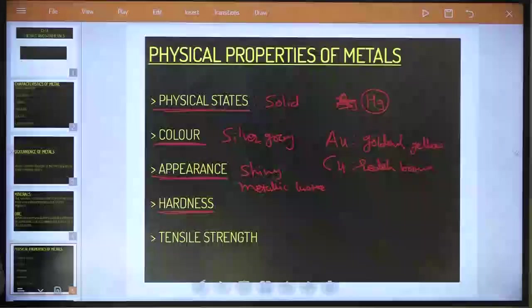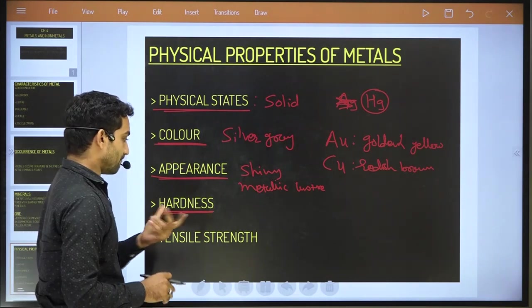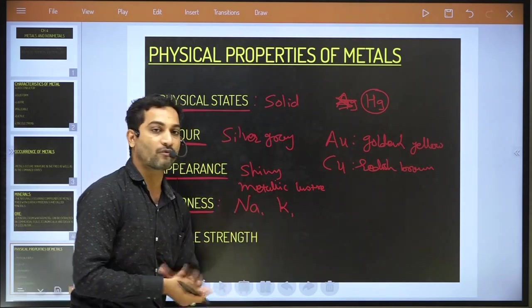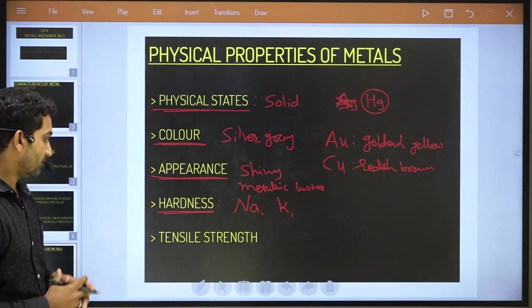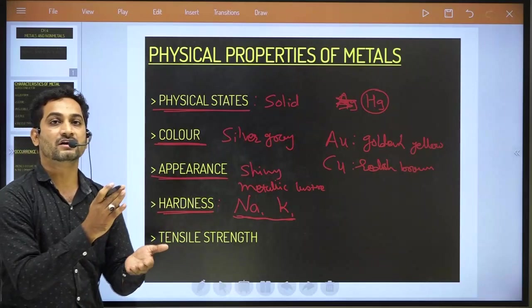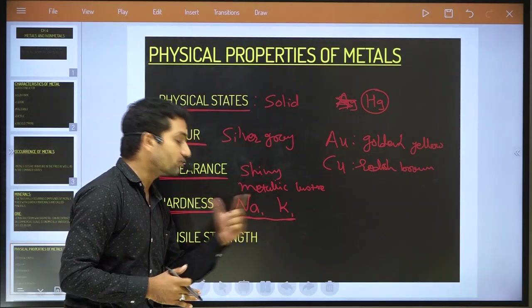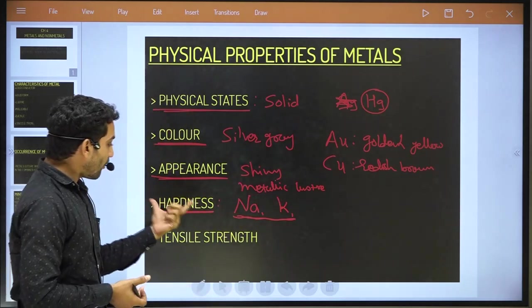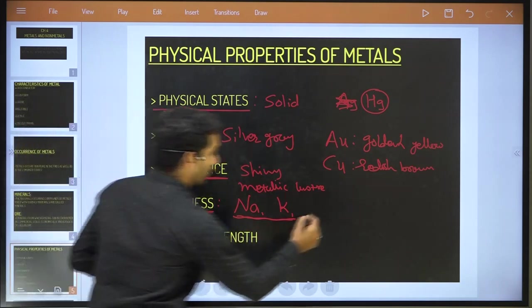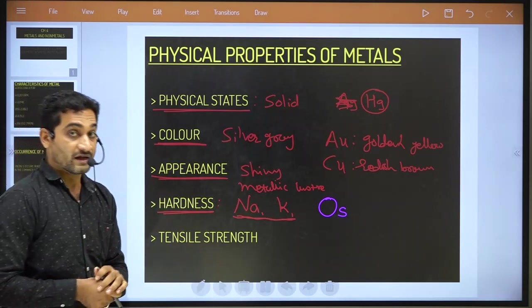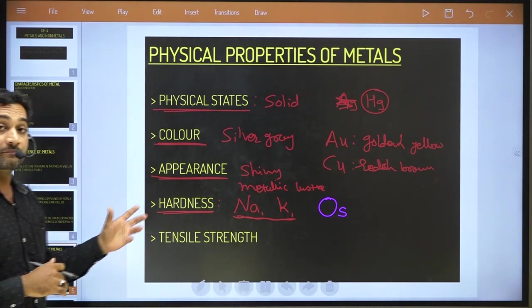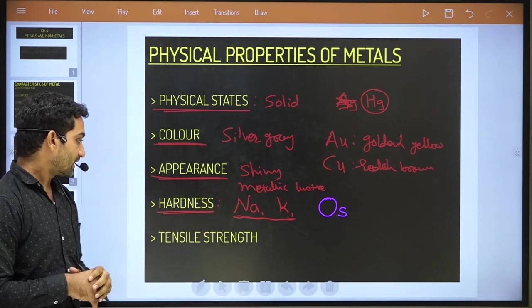Hardness: metals are very hard, except sodium and potassium, which are soft — soft enough to cut with a knife. Remaining all metals are very hard. A very hard material is osmium (symbol Os), which is hard enough to make a scratch on glass. Osmium is the hardest material.